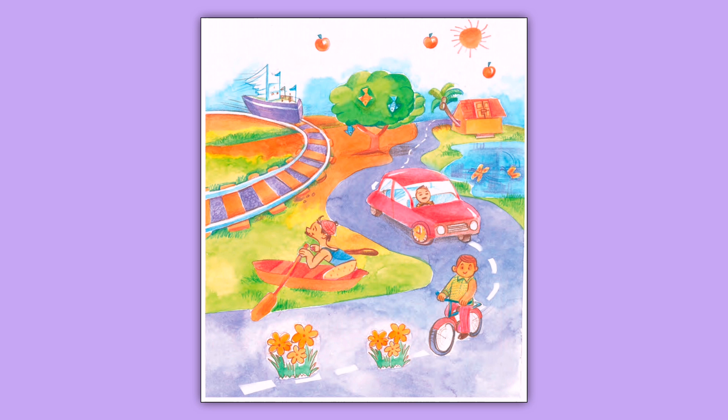अब हम third funny thing spot करते हैं इस picture में — a house with a door on its roof. बच्चों, घर में दरवाजा front side पे लगा हुआ रहता है। क्या आपने कभी देखा है कि घर का main door घर की roof पर बना हुआ हो? नहीं, यह possible नहीं है। इस funny picture में एक house बताया गया है जिसकी roof पर एक door नजर आ रहा है। So this is the third funny thing we can see in this picture.